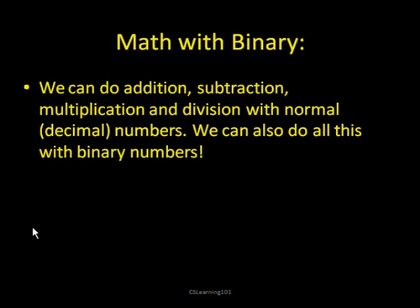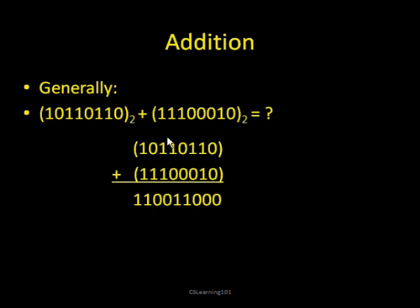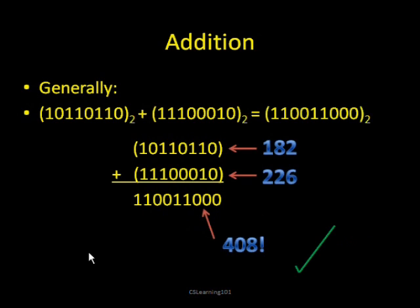Now we're going to do some math with binary. We can do addition, subtraction, multiplication, and division with normal decimal numbers, and in the same way we can do this with binary numbers. To add two binary numbers, you add them exactly like you would with normal decimal numbers — just keep in mind you're using only 1s and 0s. For example, 0 plus 0 is 0. 1 plus 1 would be 2, but you can't have 2, so you write 0 and carry the 1. 1 plus 1 plus 0 is 0 again, carry the 1. 1 plus 0 plus 0 is 1. You can check your work by converting to decimal — this equals 182 plus 226, which does equal 408.